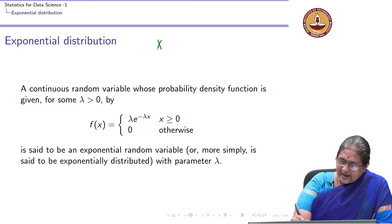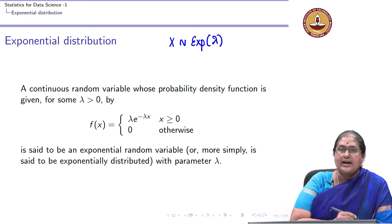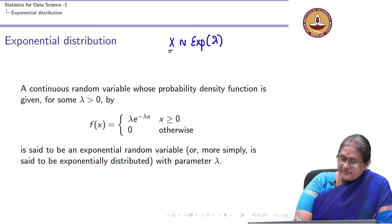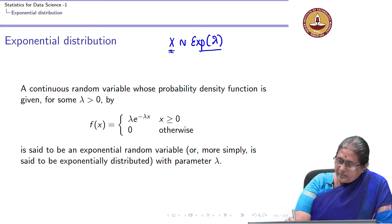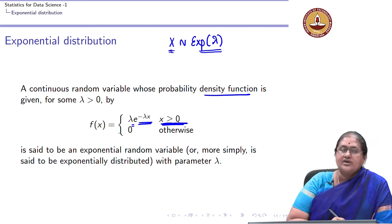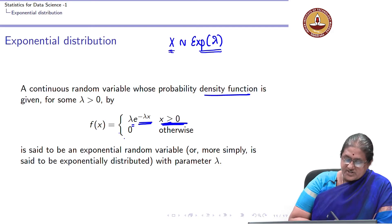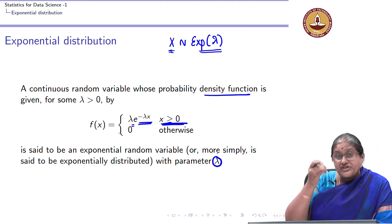A continuous random variable X is said to follow an exponential distribution with parameter lambda if its probability density function is given as lambda times e to the minus lambda x, for x greater than or equal to 0, and 0 otherwise. This parameter lambda is called the parameter of the exponential distribution.